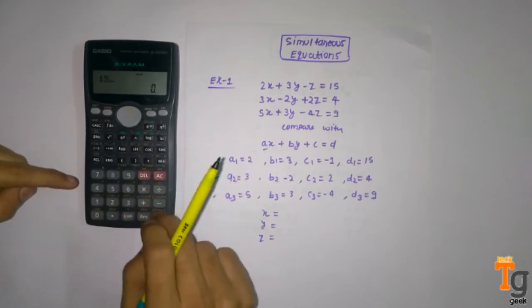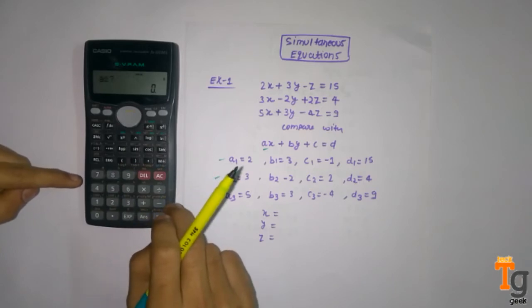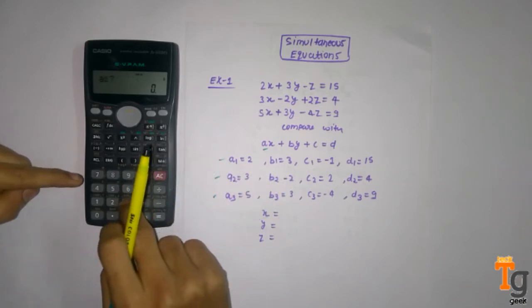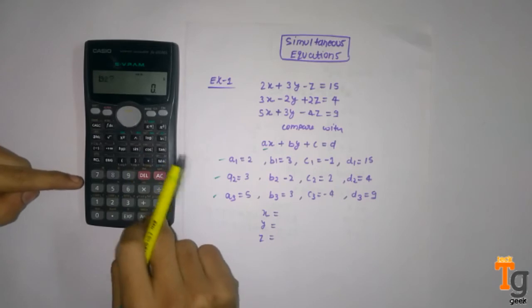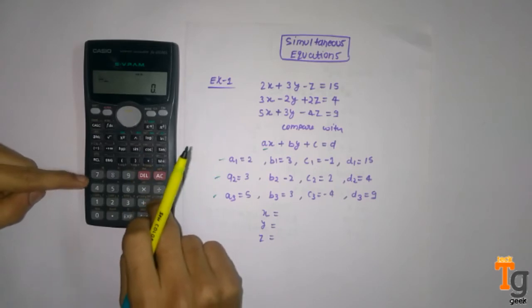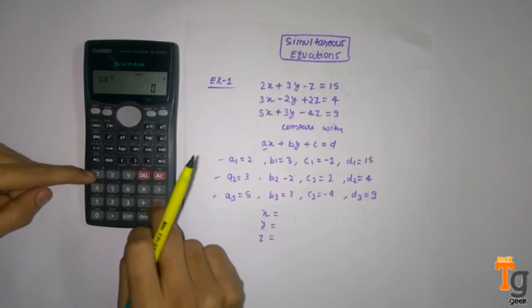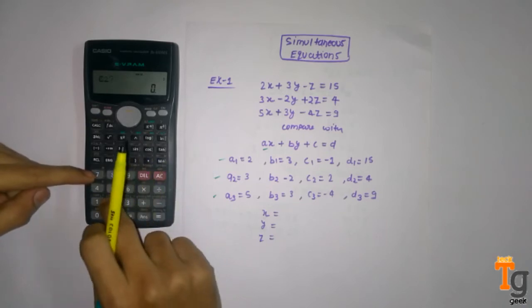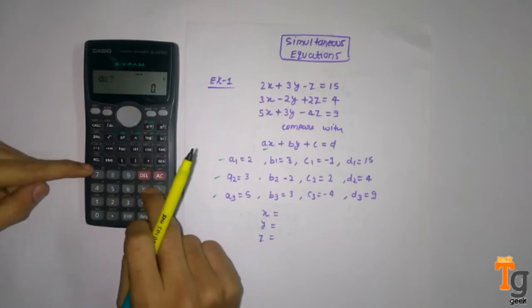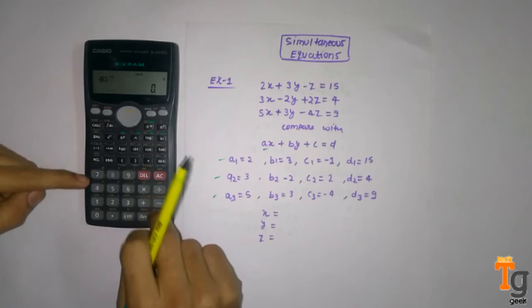We will enter all these values. For the second equation: a2 is 3, b2 is minus 2, c2 is 2, d2 is 4.